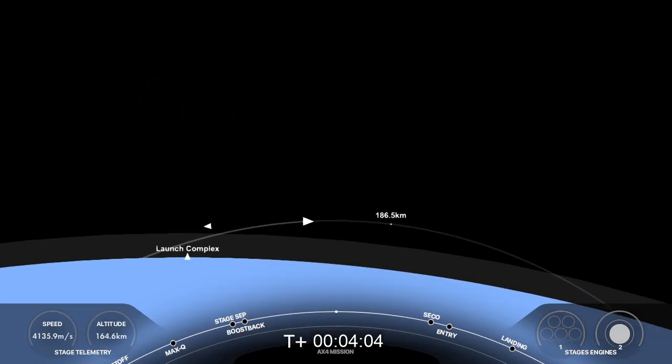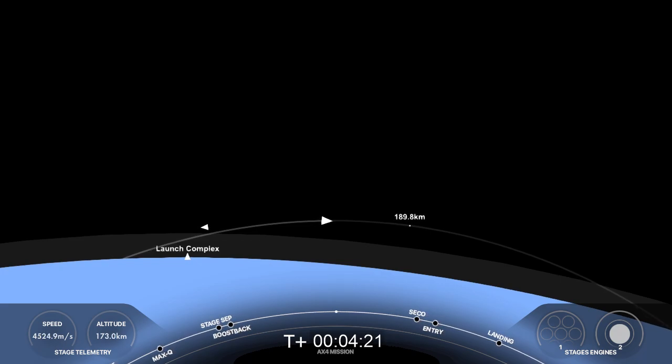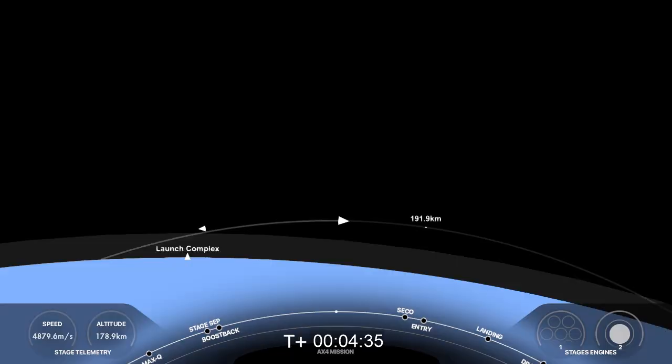Meanwhile, first stage continuing to coast up to apogee. And actually now as you can see on the bottom left of your monitors, we have begun coming back down. It takes a couple of minutes to go up, a couple of minutes to come back down. That first stage heading back to landing zone one at Cape Canaveral. Dragon SpaceX, nominal trajectory. Words we love to hear. Dragon copy, nominal trajectory. Peggy Whitson echoing back the call up from the ground.